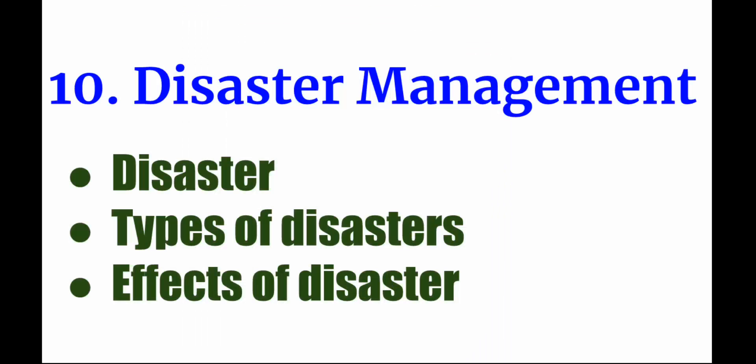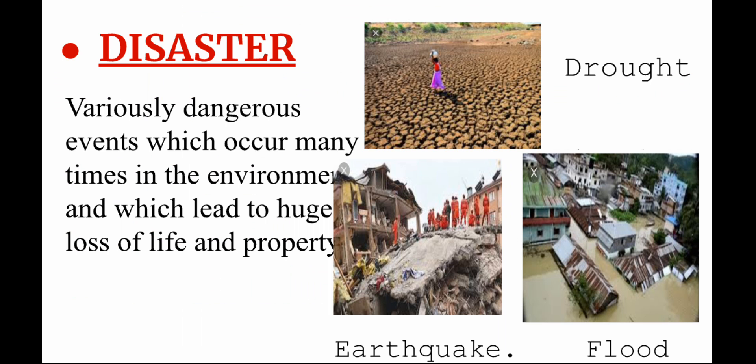Disasters means various dangerous events which occur many times in the environment and which lead to huge loss of life and property. Here you can see some pictures of disasters, like drought or famine. Famines are of two types: dry famine and wet famine.